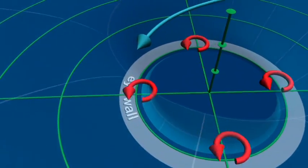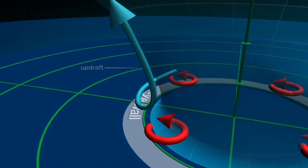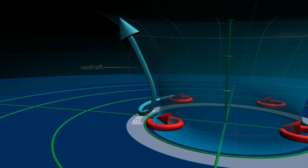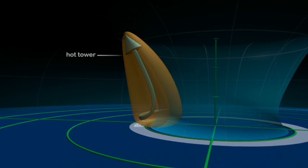Near the surface, air spiraling inward collides with these vortices, forcing the air upwards, creating an updraft. A very strong updraft in the eyewall carries moisture much higher than normal, creating a hot tower.